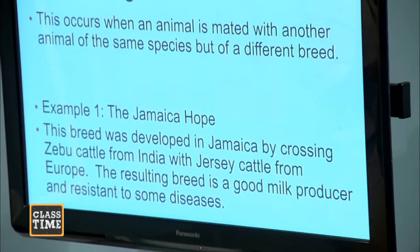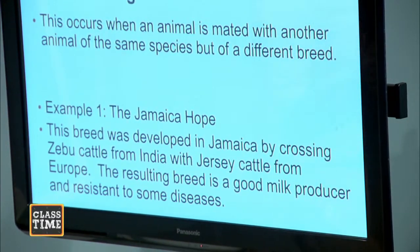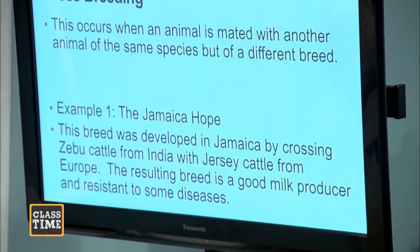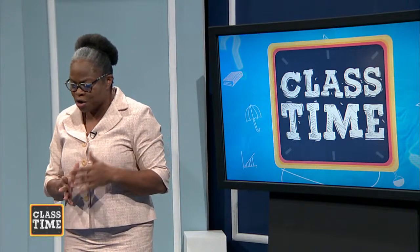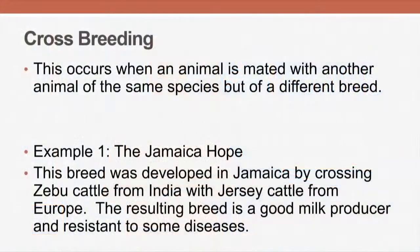We have looked at genetic inheritance, and so it's going to be easier for students to understand as we go into the different systems of breeding. The first one I want to look at is crossbreeding. Crossbreeding occurs when an animal is mated with another animal of the same species but of a different breed.